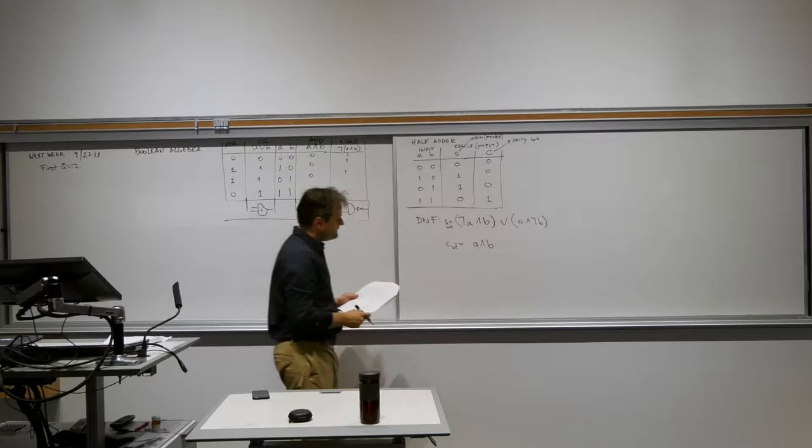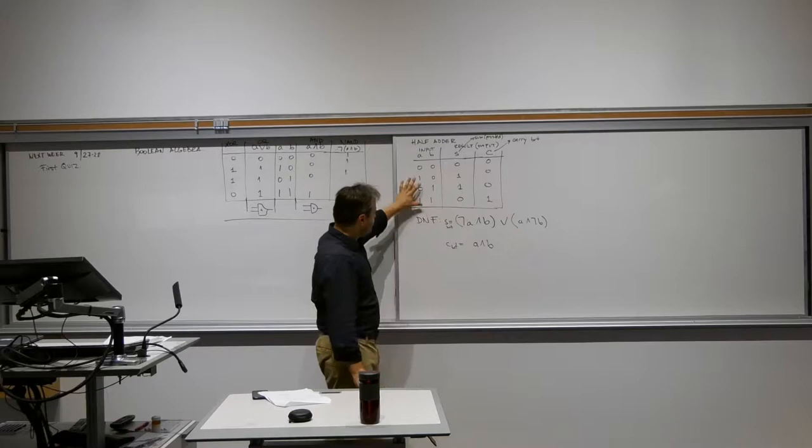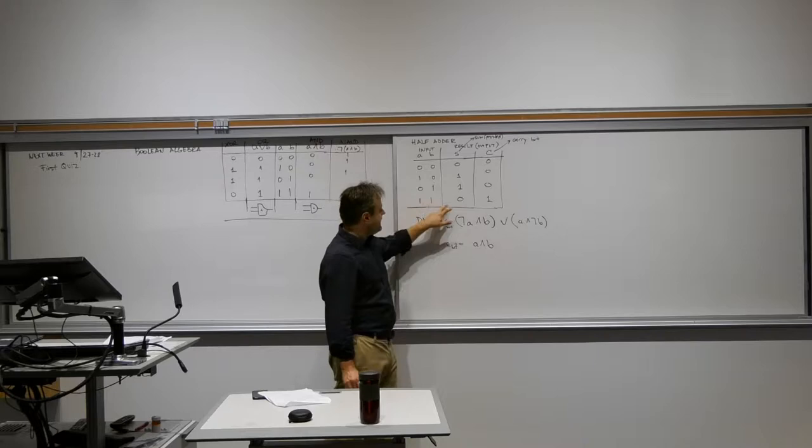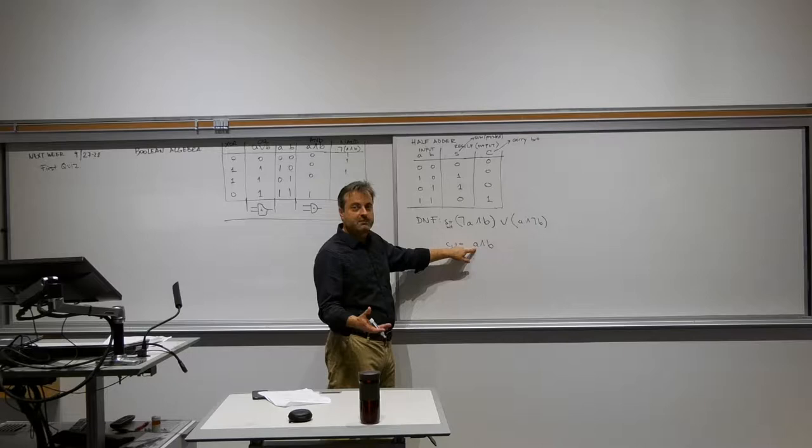Let's verify that this is correct. The carry bit as a function of these two bits — you can easily say it's one only when both of them are one, so that's the AND. In the other three cases it's zero. I don't want to waste time on it, but if you feel like we're getting stuck, please stop me. Otherwise I'm going to go a little faster.